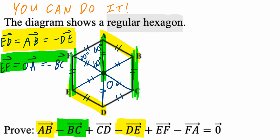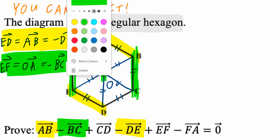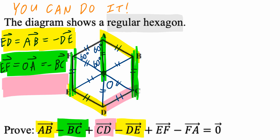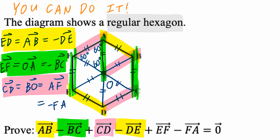One more time: vectors CD, BO, and AF are the same. So vector CD equals vector BO, which equals vector AF. And of course, vector AF equals negative vector FA.